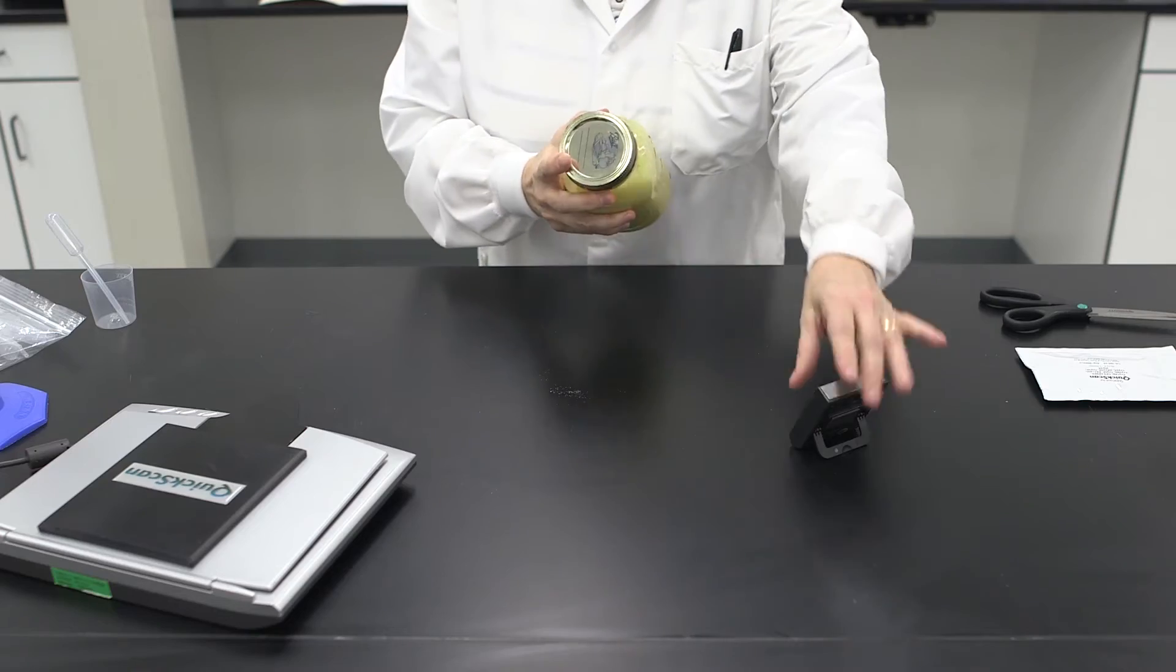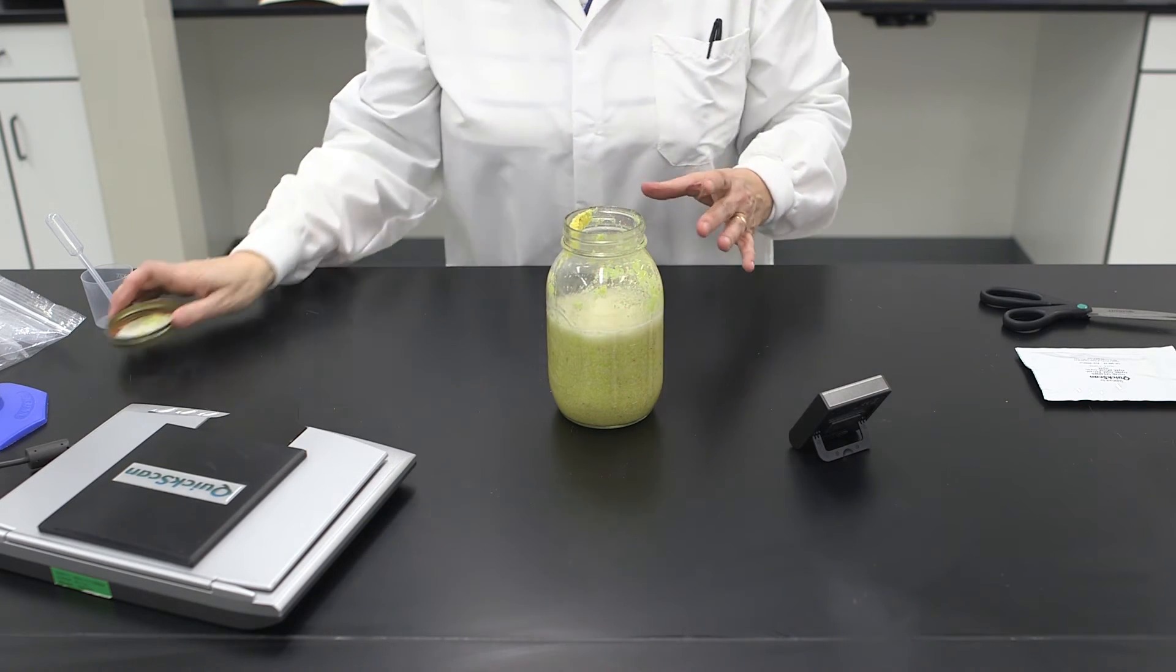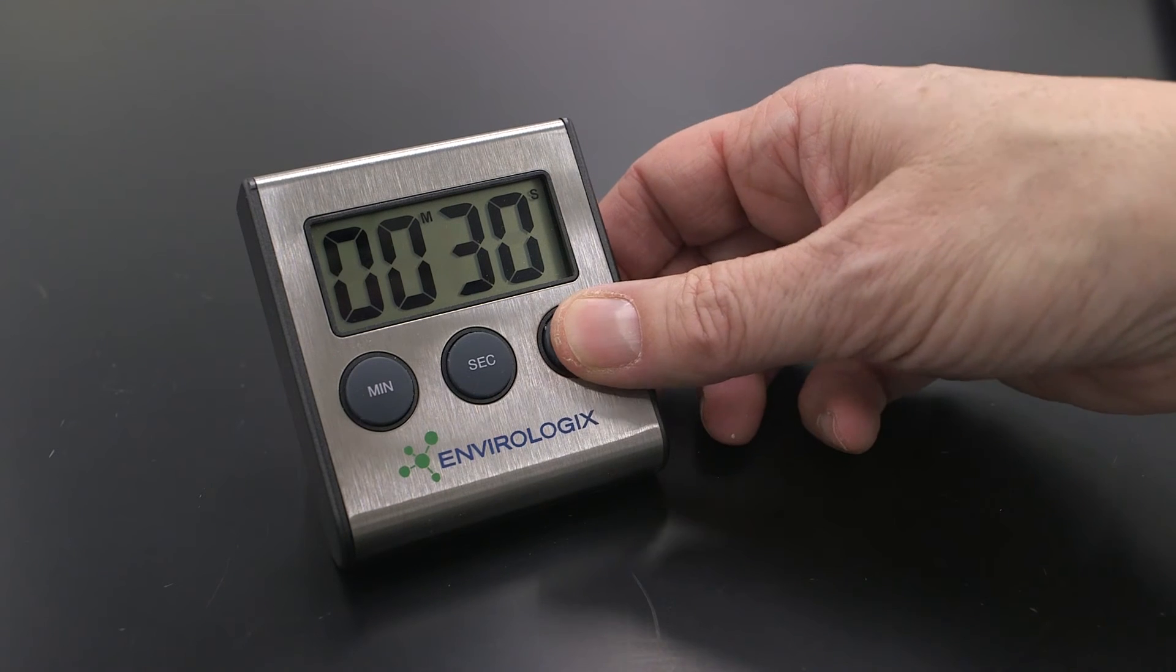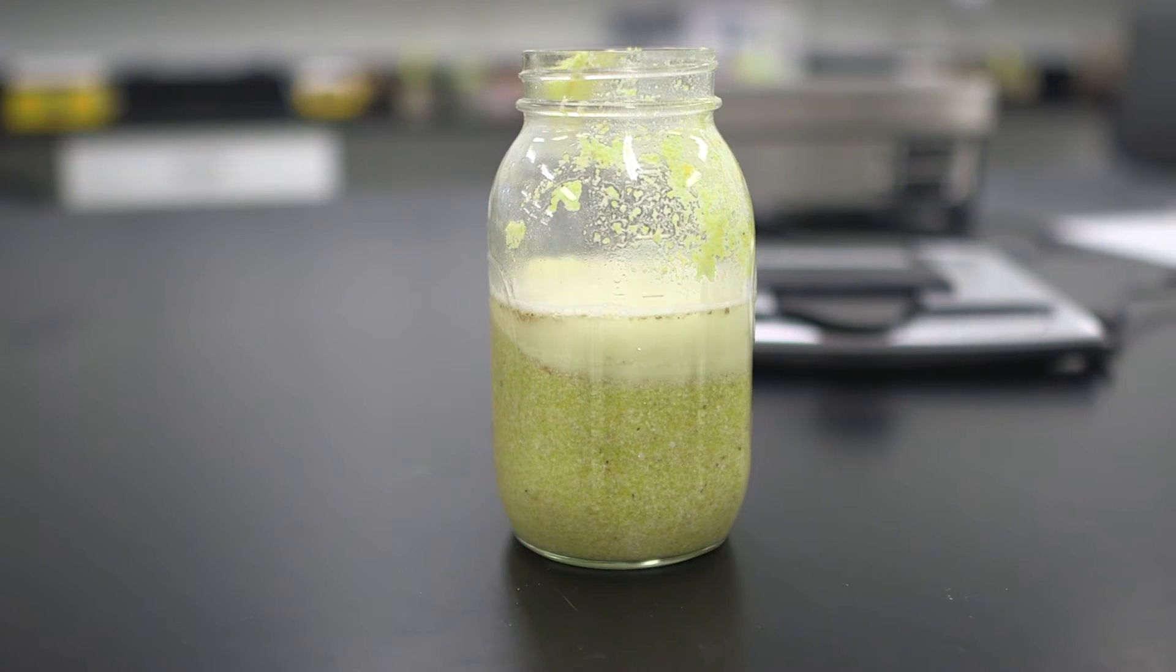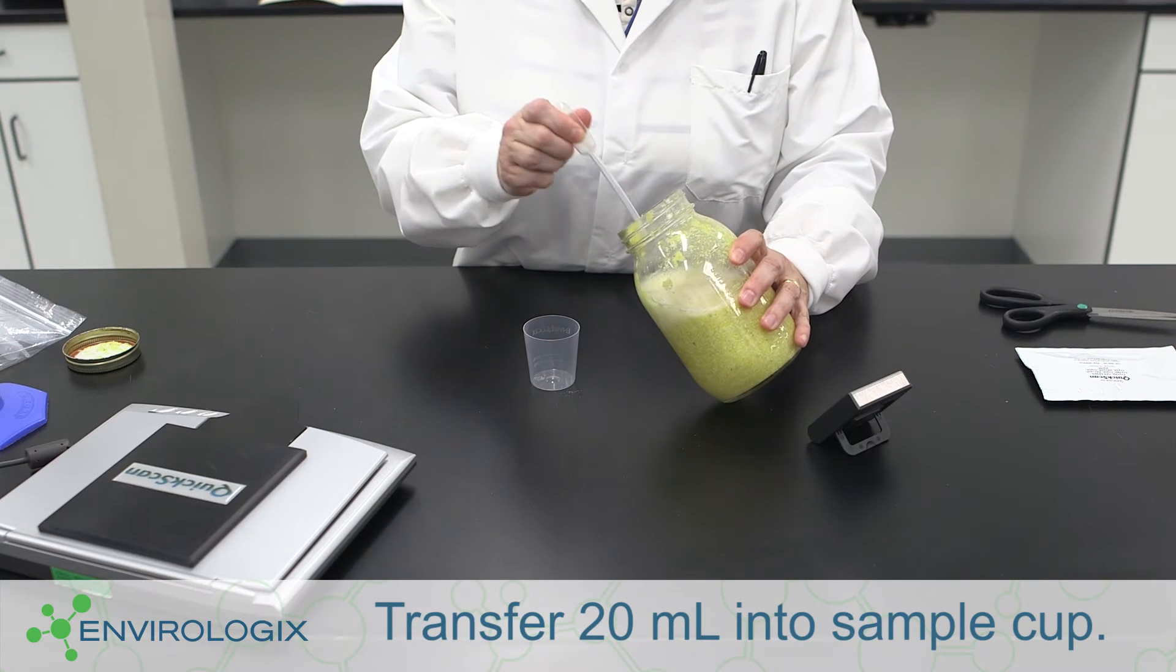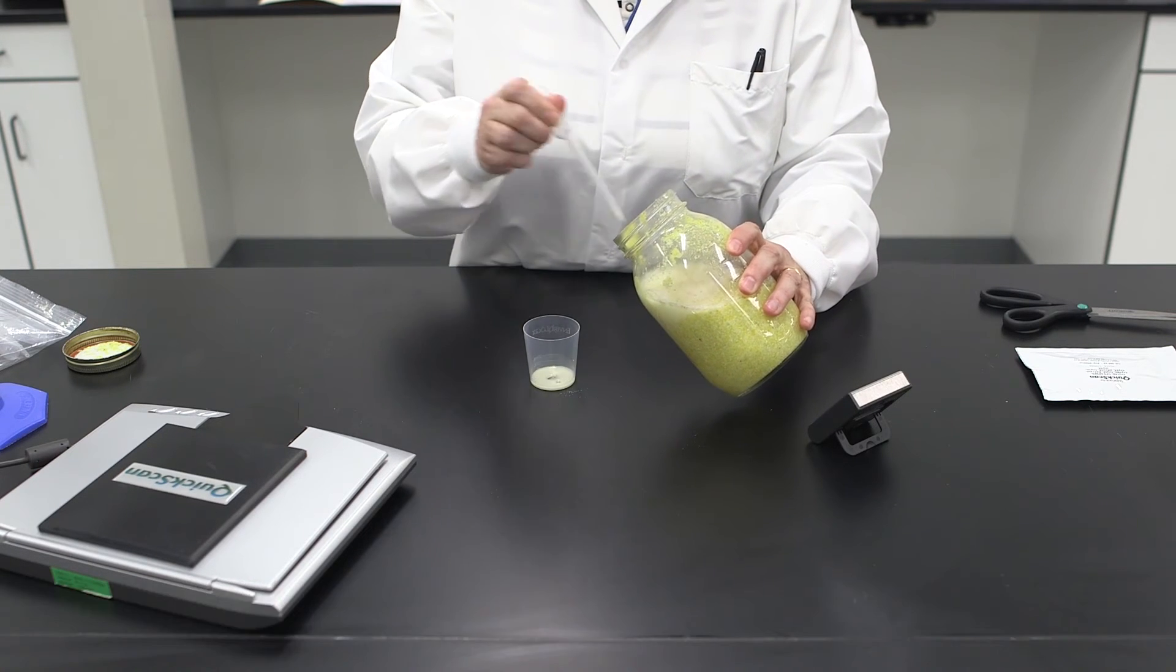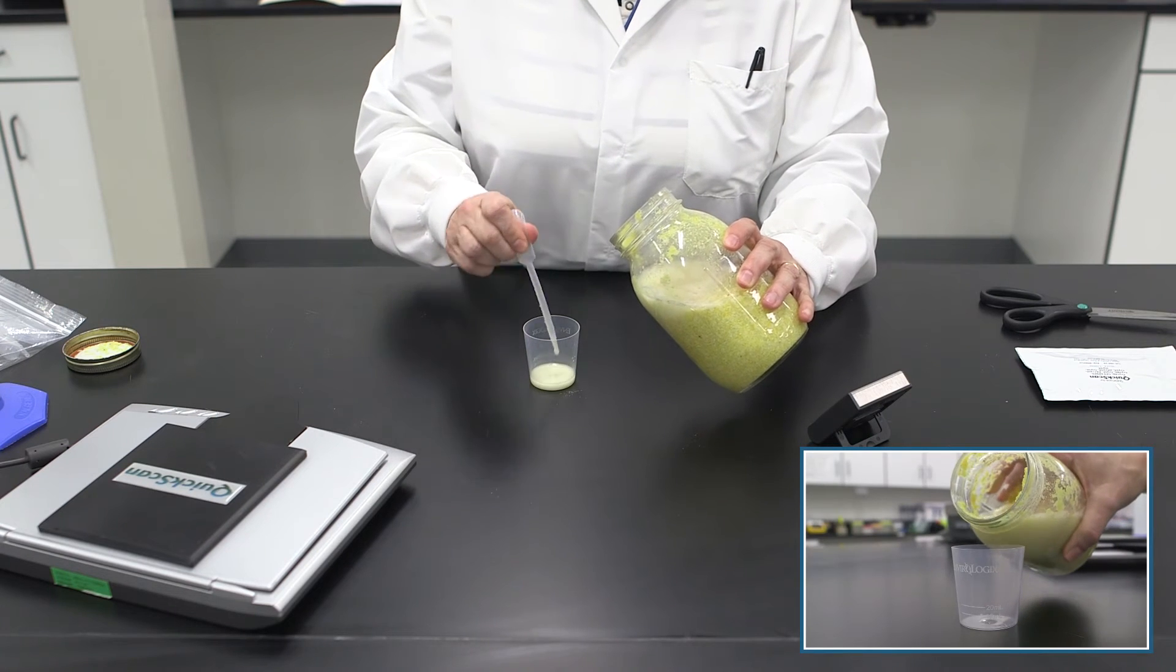Allow the sample to settle for 30 seconds. Transfer 20 milliliters of the top liquid portion into a sample cup using the provided pipette, or by pouring directly into the cup.